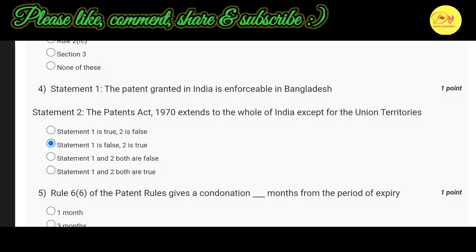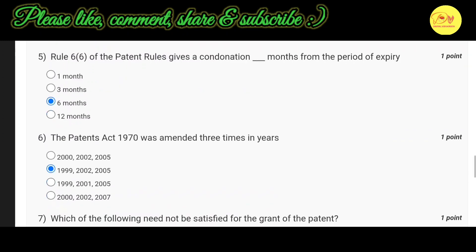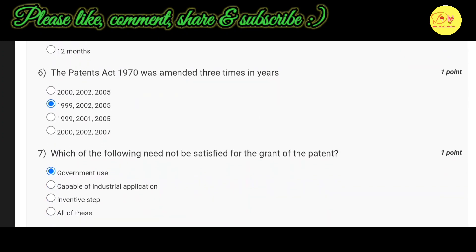Our fifth question is: Rule 6 of the Patent Rules gives a condonation of how many months from the period of expiry? The correct option is C — six months. Our sixth question is: The Patents Act 1970 was amended three times in which years? The correct option is B — 1999, 2002, and 2005.